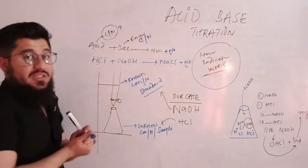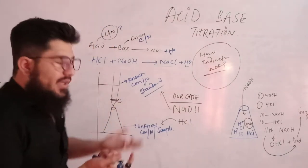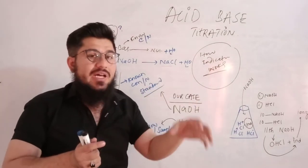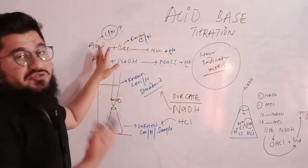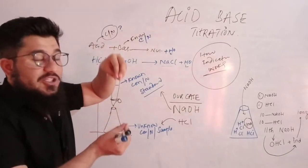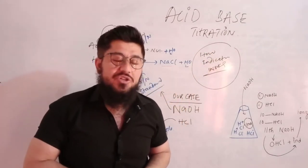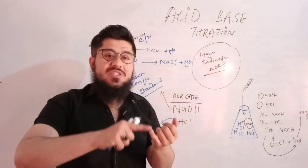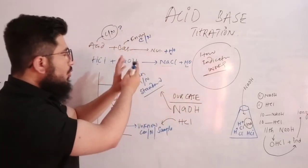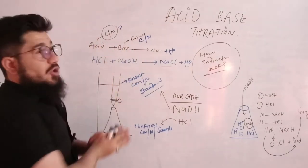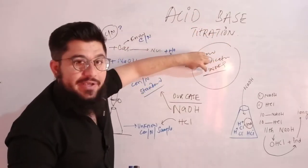When you are given such a scenario — one known and one unknown — mathematically, if we have one value and another is unknown, we can cross-multiply to find the answer. The same applies here: we know the base and we don't know the concentration or normality of the acid. So to find this, we interact the two together. This mechanism of interacting them is called acid-base titration — a mechanism through which we identify the concentration or normality of an unknown acid or base.